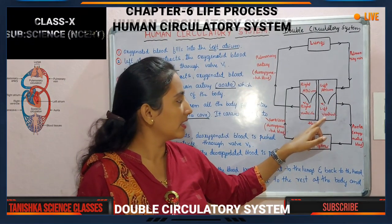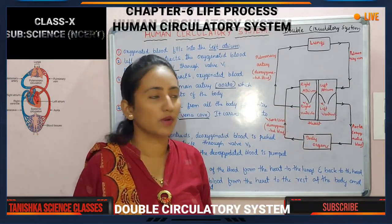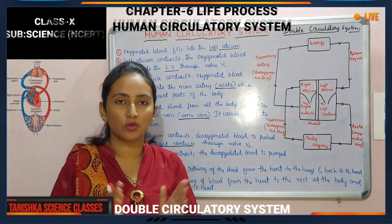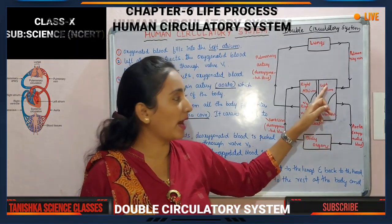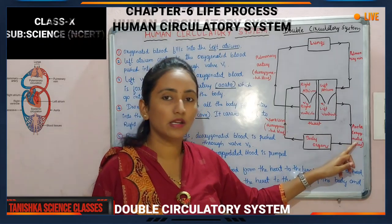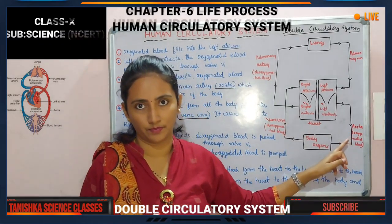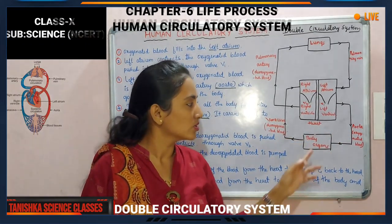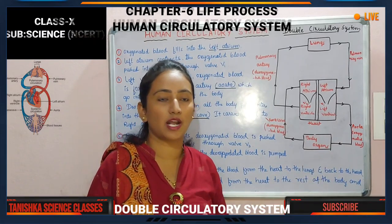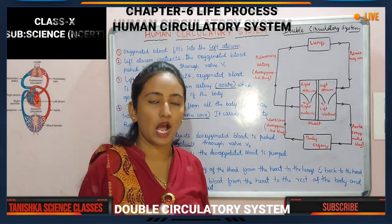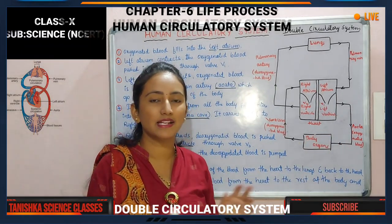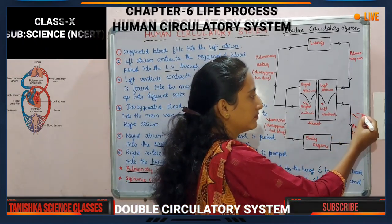When the ventricle contracts, blood will not go back to the atriums because valves V1 and V2 close the pathway. Oxygenated blood fills into the left atrium, atrium contracts, blood transfers to the left ventricle. The ventricle then contracts and blood is pumped by the heart into the main artery called the aorta. Through the aorta, blood is pumped with high pressure and transferred to all body organs.